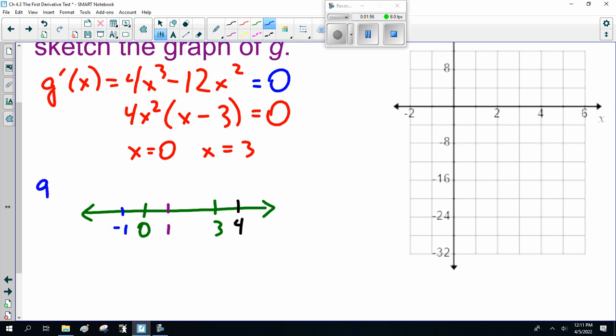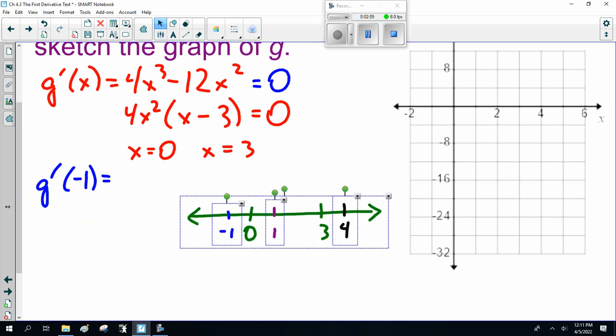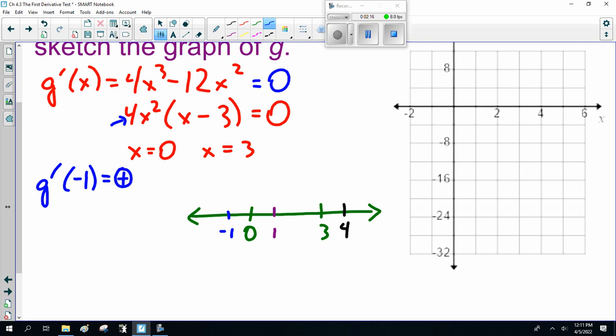Now, when I go minus 1, 1 and say 4, some nice numbers to check. So when I go g prime of minus 1, the derivative, is it positive or negative here? Minus 1 squared is positive, so that's going to be a positive number. Minus 1 minus 3 is going to be negative, so it's going to be negative here.